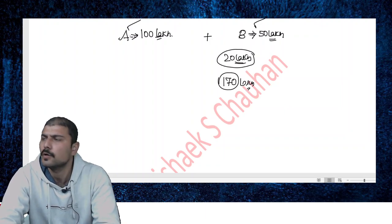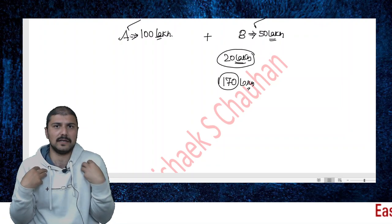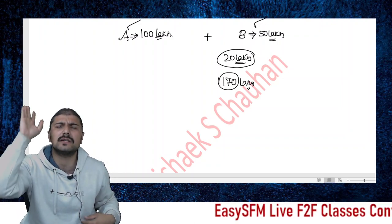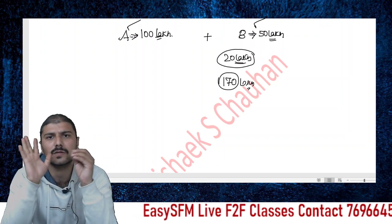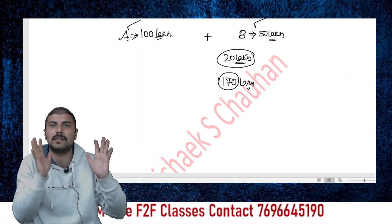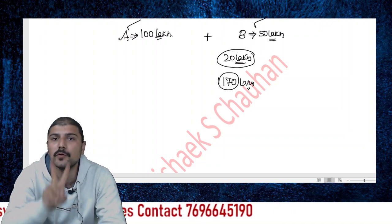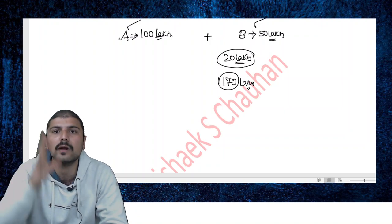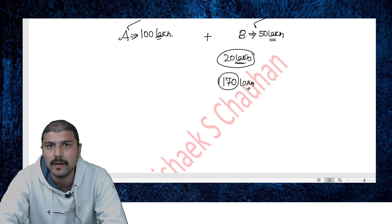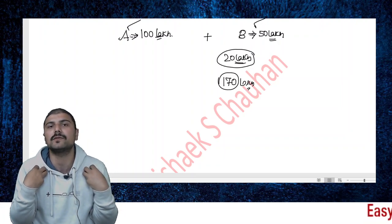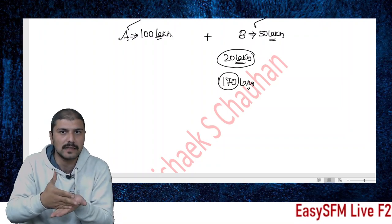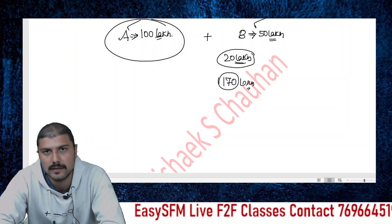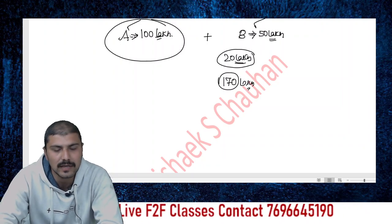Now for the maximum: if someone asks me — the acquiring company — what is the maximum value you can provide? I would say I must at least preserve my own pre-merger value; the rest can go to the other party. So maximum value to be provided to the old company = combined value minus acquirer's pre-merger value. In that case, all the synergic effect goes to the old company's shareholders. So: minimum value required = old company's pre-merger value; maximum value = combined value minus acquirer's pre-merger value.